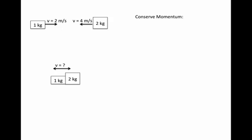The initial momentum of the two carts together must equal the final momentum, because in a closed system momentum always remains the same. If I put my hand in and smacked them, that would not be a closed system. If this happened in outer space and I gave the system momentum to the left, I myself would gain momentum to the right.